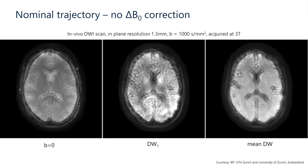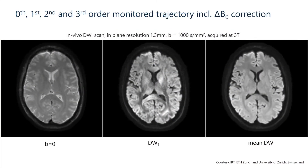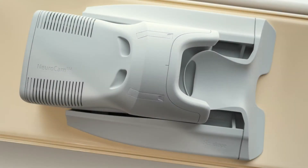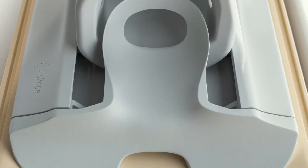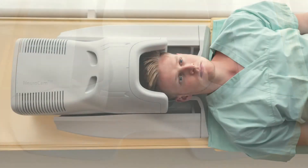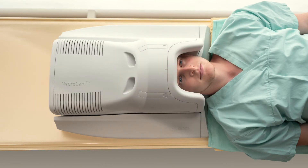Monitoring MRI field dynamics during MRI acquisition gives you the tool to reconstruct the most accurate and consistent diffusion-weighted data. The NeuroCam is our unique brain coil optimised for neuroscience research with incorporated spatiotemporal magnetic field monitoring capabilities for a single ready-to-use package for in vivo neuroimaging at 3T.